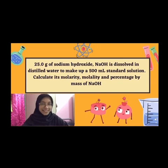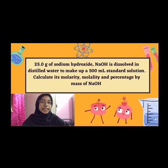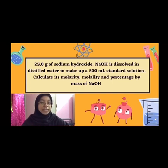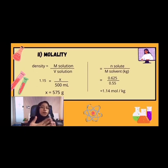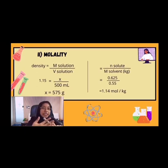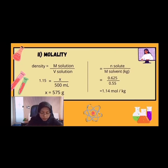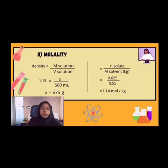Let's do some questions for better understanding. 25 grams of sodium hydroxide is dissolved in distilled water to make up a 500 milliliter standard solution. Calculate its molarity, molality, and percentage by mass. So, for the mass of solvent, we must convert it to kilograms, so we got 0.55 kilograms for mass of solvent. To calculate molality, we divide the number of mol of solute, which is 0.65, by mass of solvent in kilograms, which is 0.55, and we got 1.4 mol per kg.